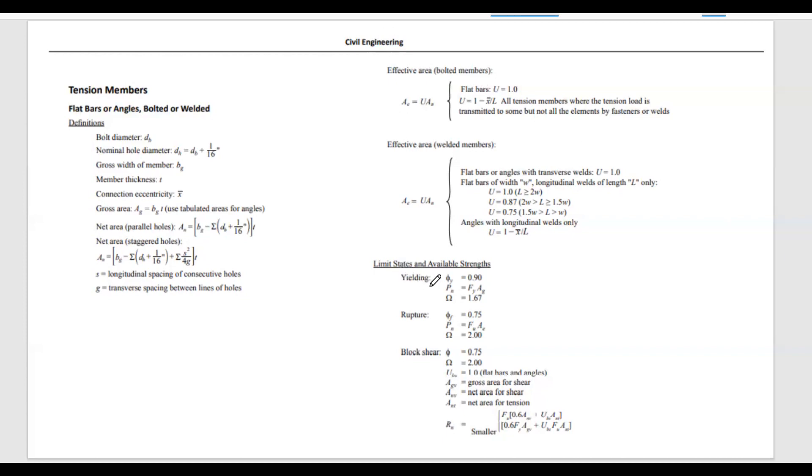These are yielding, rupture, and block shear. Today, we are going to focus on yielding. The condition for yielding is Pn equals Fy times Ag, where Fy is the yield strength of steel and Ag is the gross cross-sectional area.